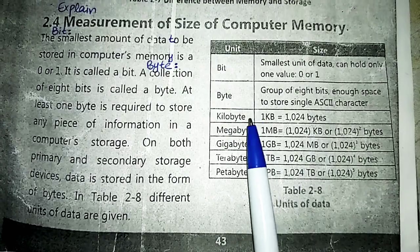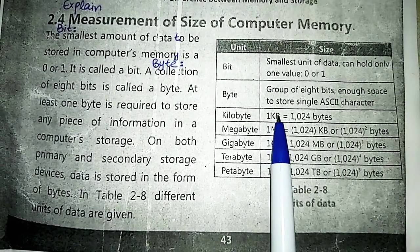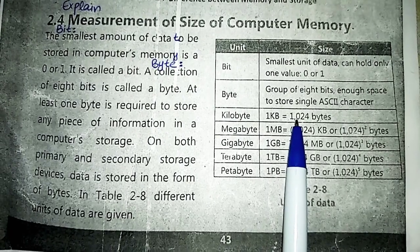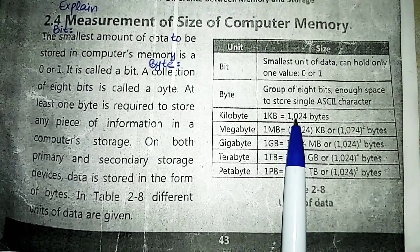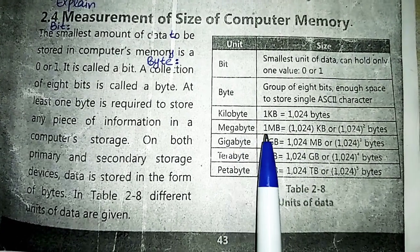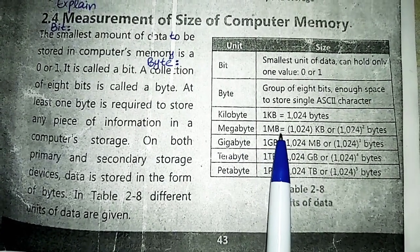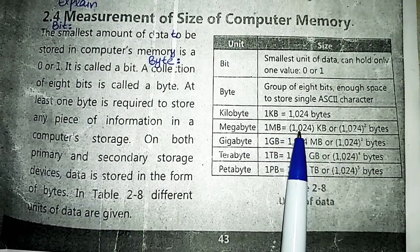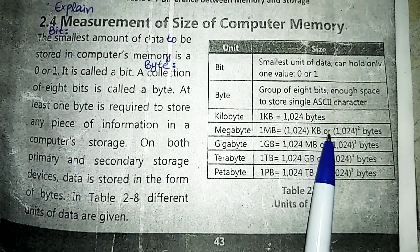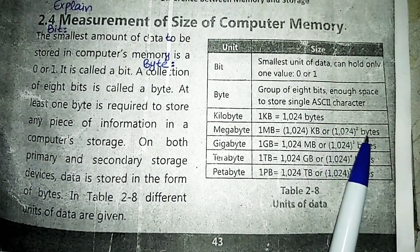Next is kilobyte. Kilobyte is represented by KB, and in one kilobyte there are 1,024 bytes. Next is megabyte. Megabyte is represented by MB, and in one megabyte there are 1,024 kilobytes, which equals 1,024 squared bytes.